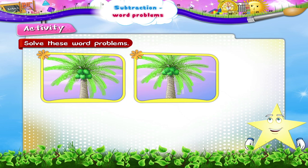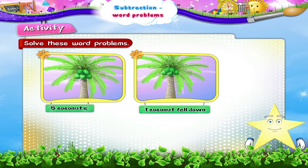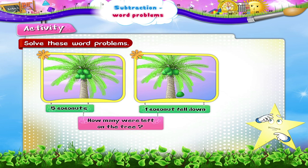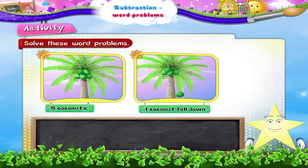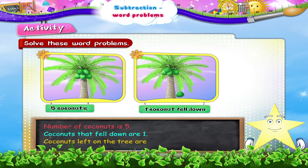There were five coconuts on a tree. One coconut fell down. How many were left on the tree? Number of coconuts is five. Coconuts that fell down are one. Coconuts left on the tree are five minus one, which is four.